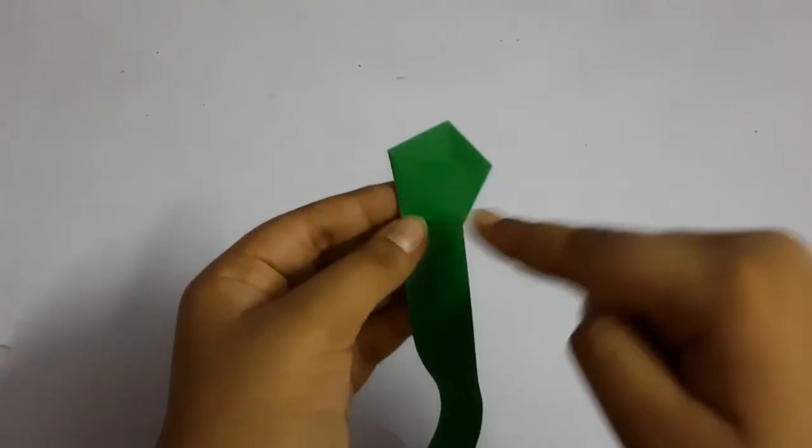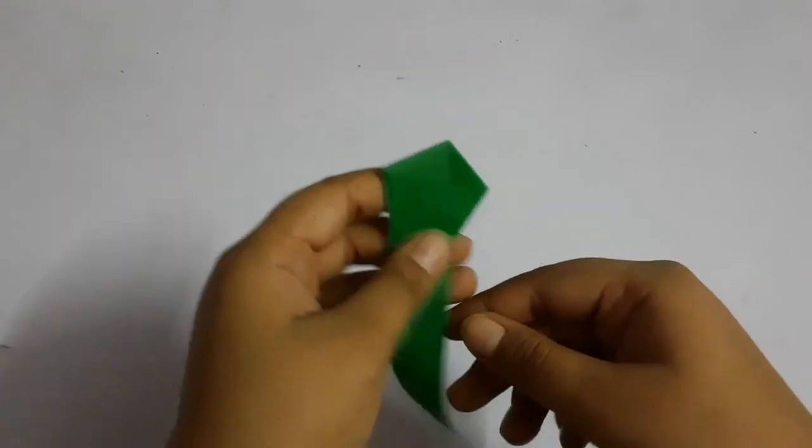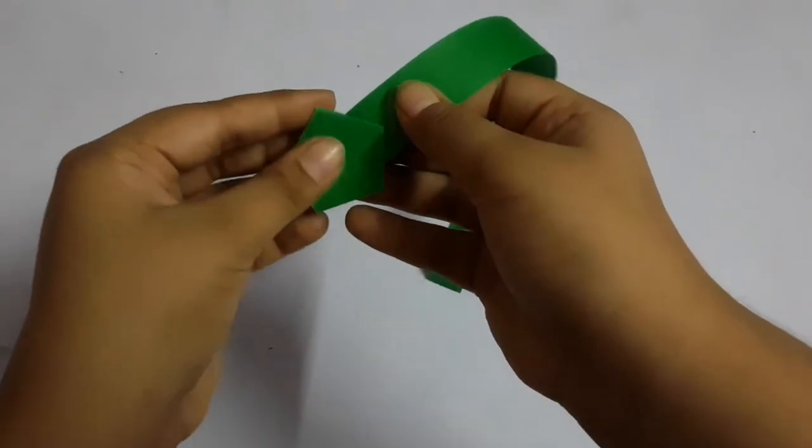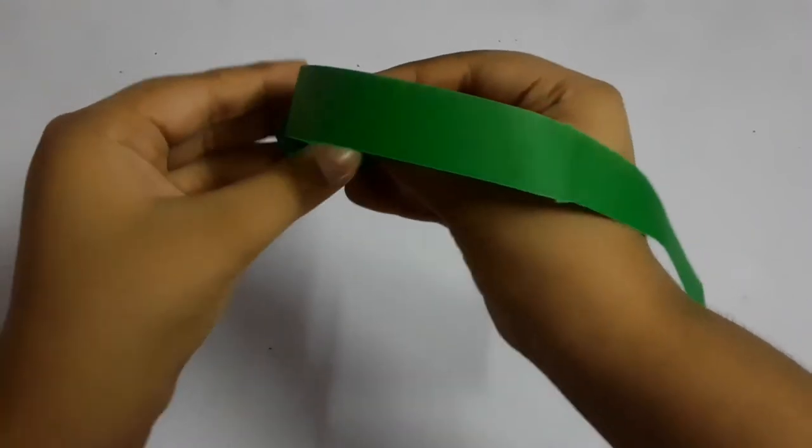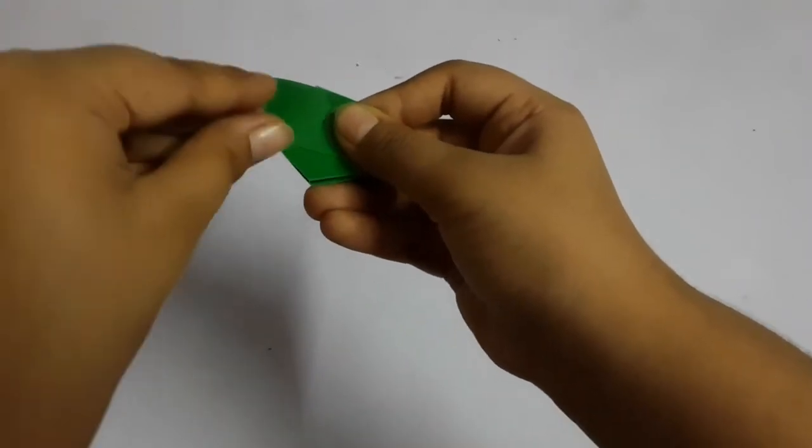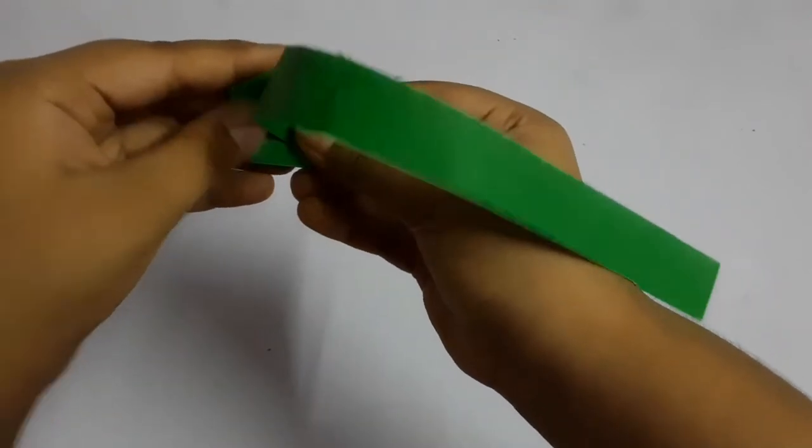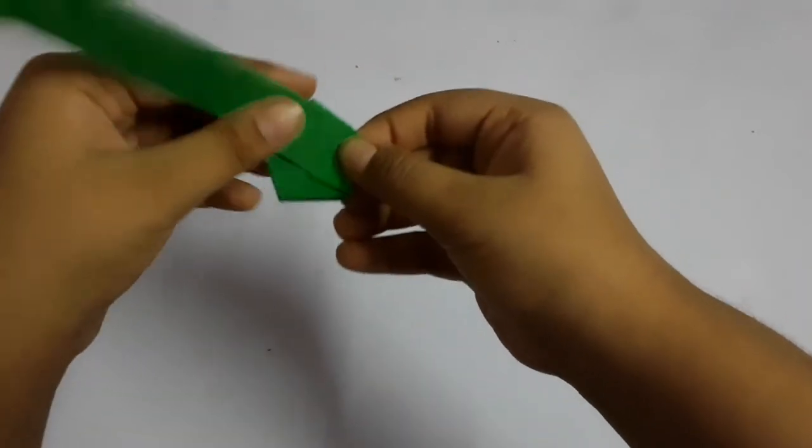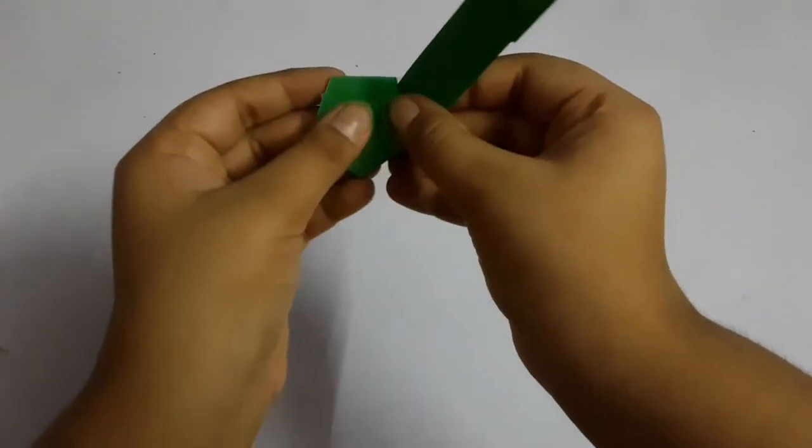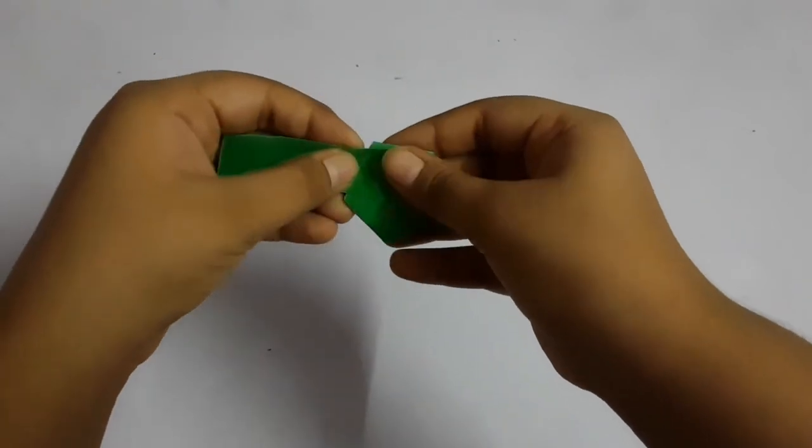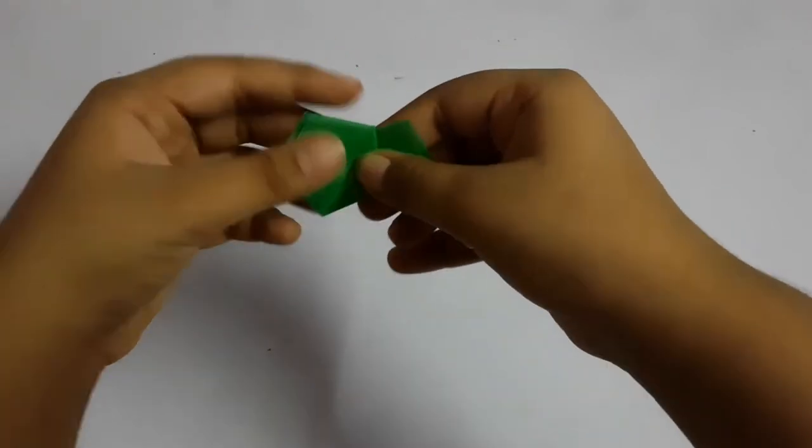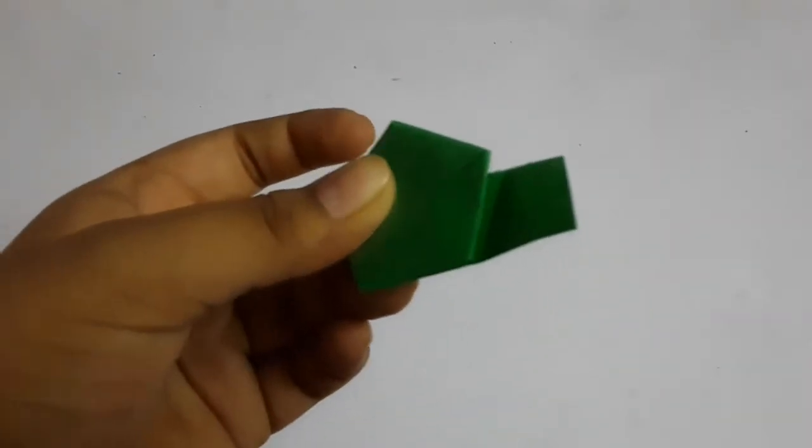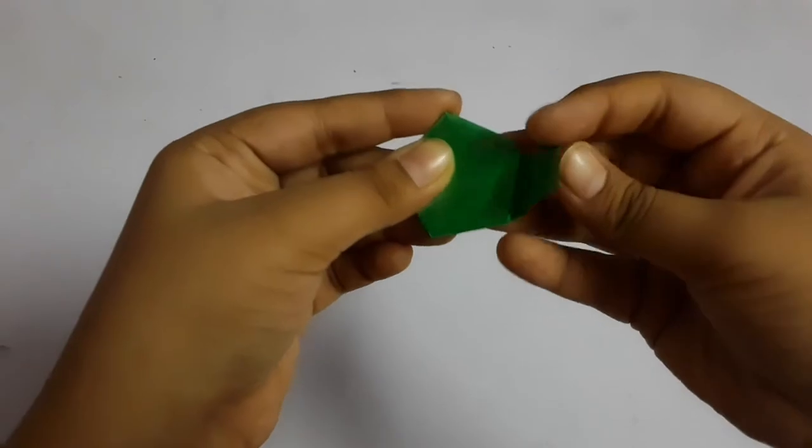If it will be extra we can take it at the back. Now we have made a pentagon shape. Now we will take this part and fold it behind, then here, then here. Follow my steps carefully then you will be able to make this beautiful star.